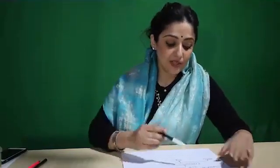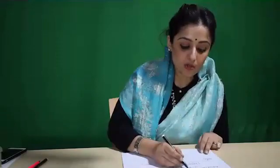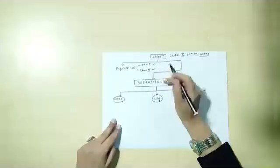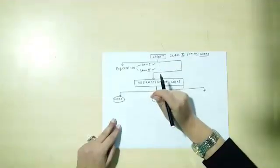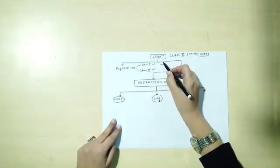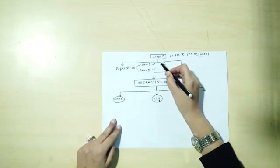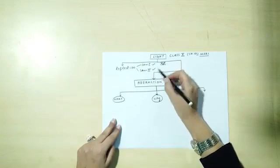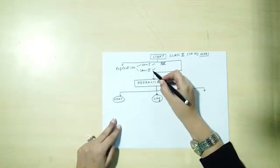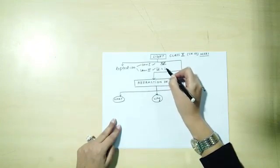In reflection of light, you have understood both the laws of reflection: one being that the incident ray, the reflected ray, and the normal all lie in the same plane. And the second being that the angle of incidence is equal to the angle of reflection.